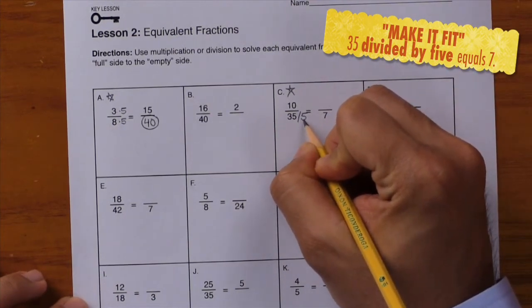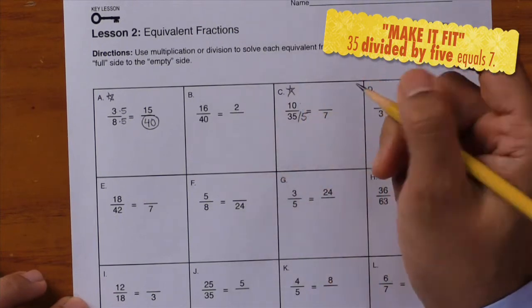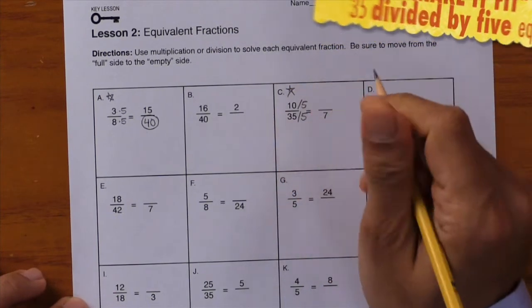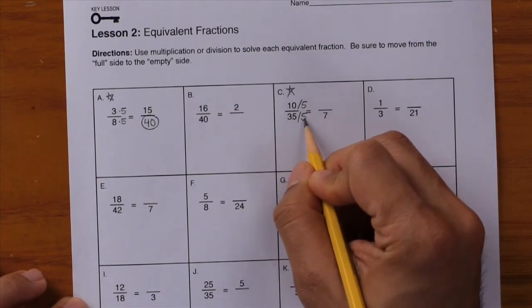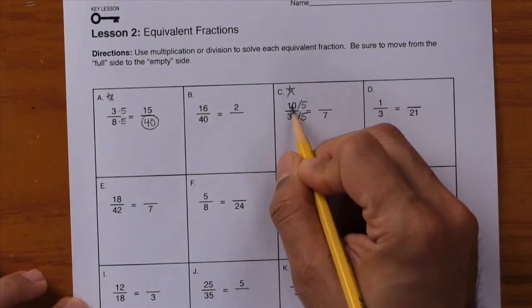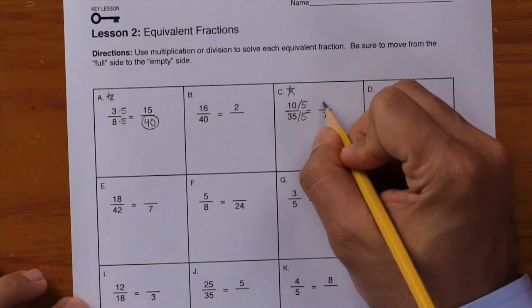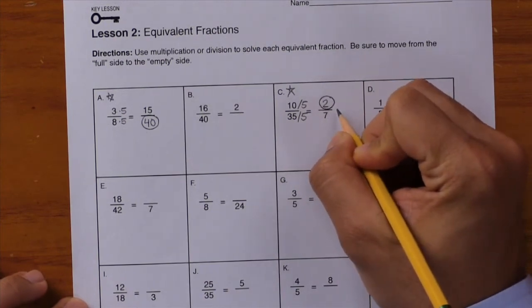Whatever you do in the denominator, do the same thing in the numerator. Write divide by 5. 35 divided by 5 gives you 7. 10 divided by 5 gives you 2. Write it down and circle, and you're done.